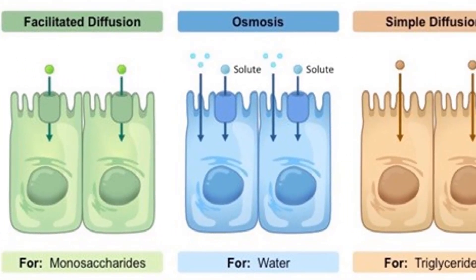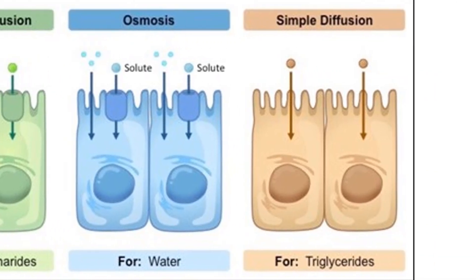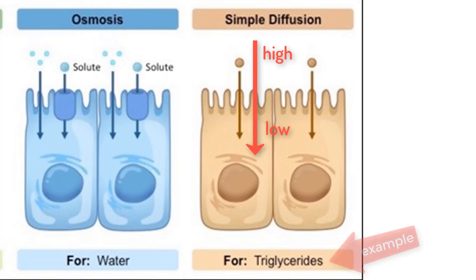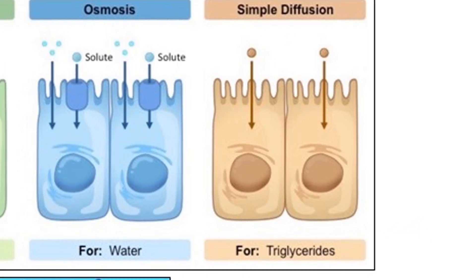Next is osmosis, which simply describes the diffusion of water from a high concentration to a low concentration. These molecules move across cell membranes in response to solute concentrations, which aids in water being absorbed in the small and large intestine. Next we have simple diffusion, which is when hydrophobic molecules pass through the cell membrane based on a concentration gradient that requires no energy.